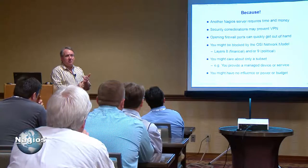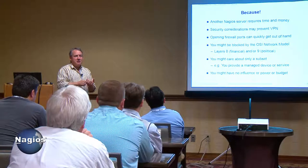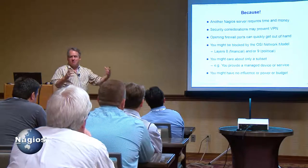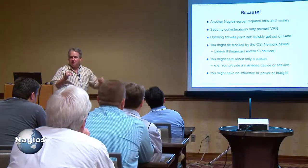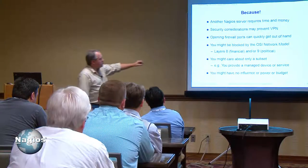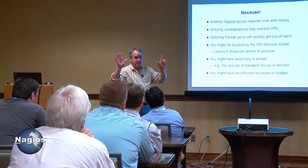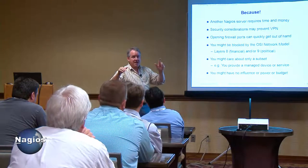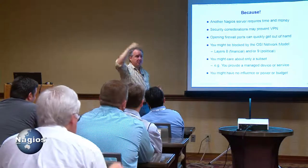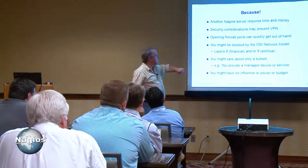You don't want to spend a lot of money or time maintaining more servers. You may not control that remote location. You may not want to open a big fat wide pipe between here and there. You may be blocked by — we all know the seven-layer OSI network model, right? But there's actually nine layers: financial and political are the top two layers, and they're the most difficult to overcome.